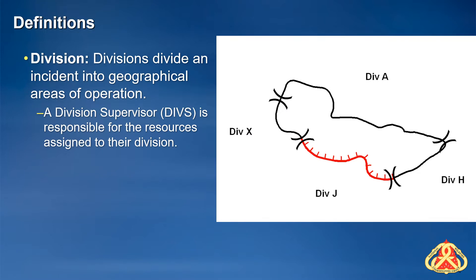Incident areas are broken down into divisions in order to identify the specific areas where resources assigned to the incident will work. They are also used to maintain the optimal span of control for the division supervisor, who is responsible for the resources assigned to a division and any operational work that takes place within that division.